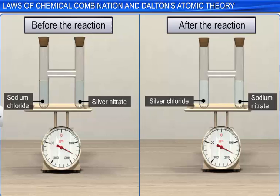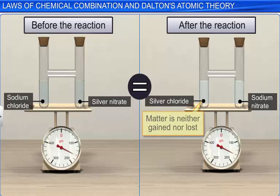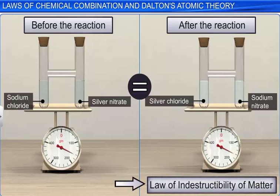Thus, we can conclude that when matter undergoes a chemical reaction, the total mass of the reactants is equal to the total mass of the products. That is, during any chemical reaction, matter is neither gained nor lost. Hence, this law is also called the law of indestructibility of matter.